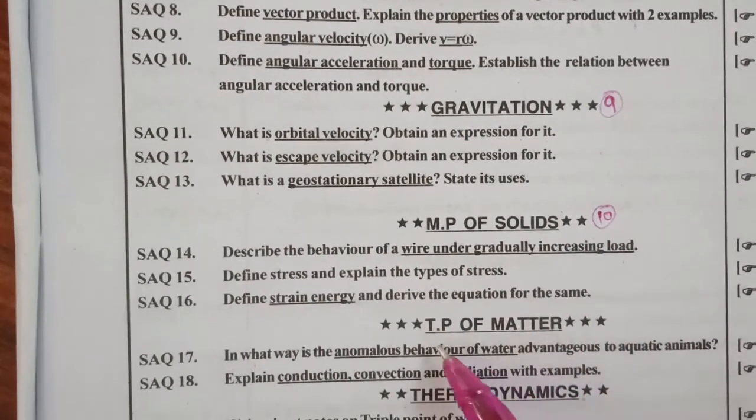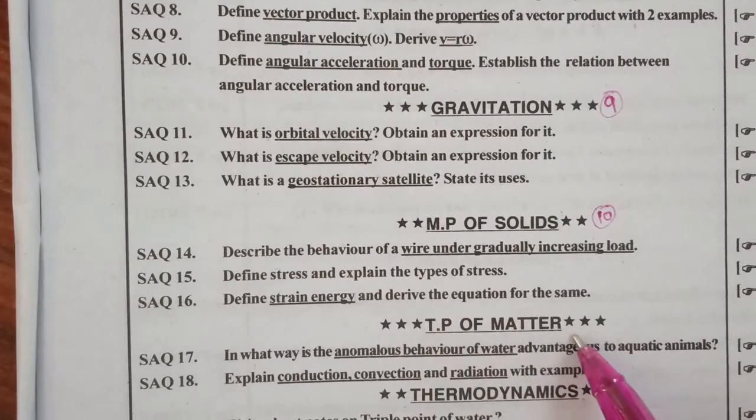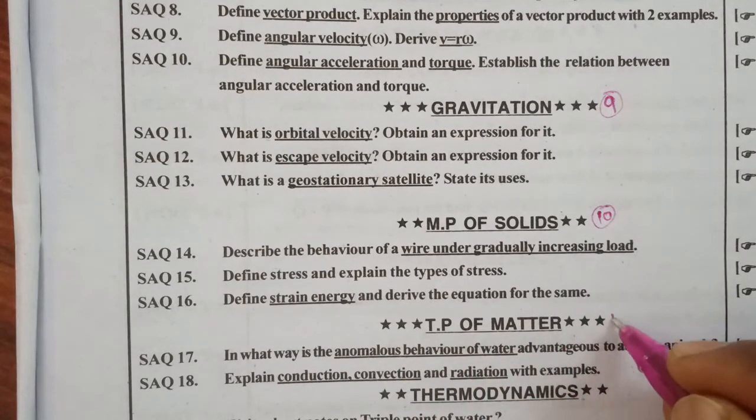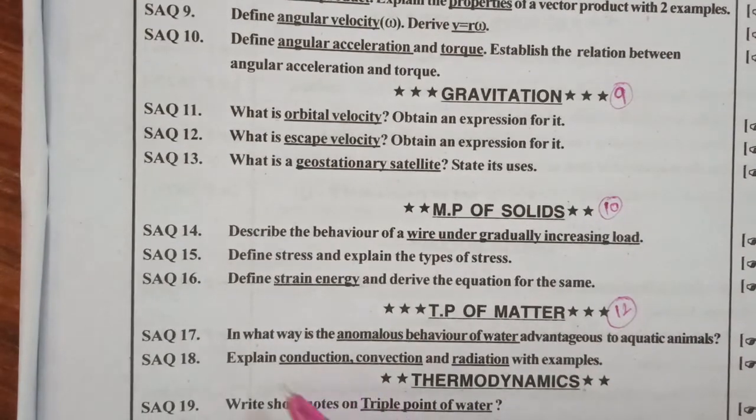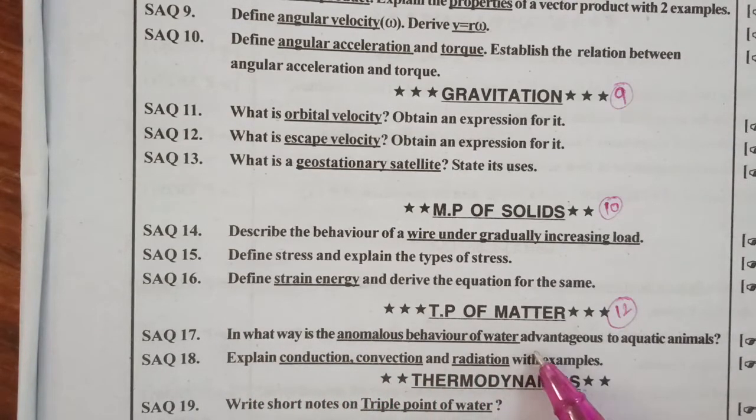Next chapter is thermal properties of matter. This is twelfth chapter. In what way is the anomalous behavior of water advantageous to aquatic animals? This was asked a number of times.